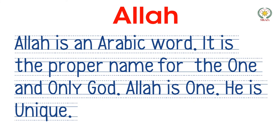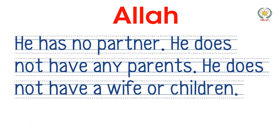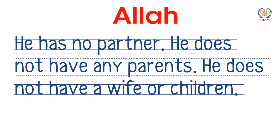Now I will explain Allah. Allah is an Arabic word. It is the proper name for the one and only God. Allah is one. He is unique. He has no partner. He does not have a wife or children.